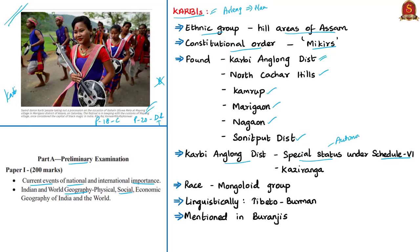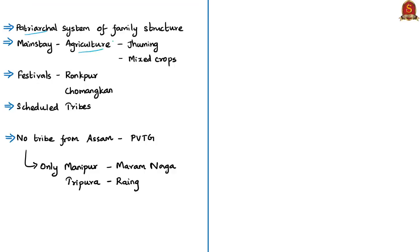Kaziranga National Park is part of a larger landscape extending into the Karbi Anglong Hills. Racially, Kharbis belong to the Mongoloid group; linguistically, they belong to the Tibeto-Burman group, whose original home was in western China near the Yangtze and Mekong rivers. Kharbis are also mentioned in Buranjis — chronicles written in the Ahom tradition. Kharbis follow a patriarchal family structure. Agriculture is their main occupation; in the hills they practice Jhum — shifting cultivation using the slash-and-burn method — and also do lowland cultivation where available.